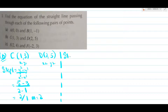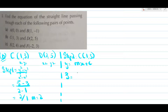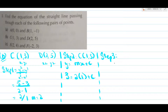Moving on to step 2, plug in either of the two coordinates. Let's go with c which is (1,3). y equals mx plus c: instead of y write 3, the gradient is 2, instead of x write 1, plus c. So 3 equals 2 plus c, therefore c equals 3 minus 2. Because we shifted 2 to the left hand side it becomes minus 2, therefore c equals 1.